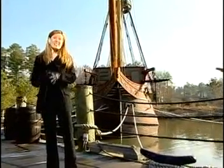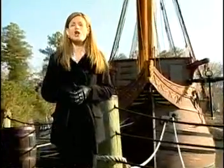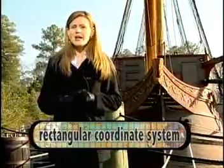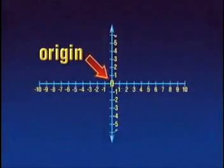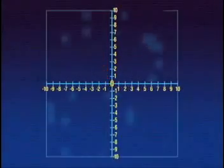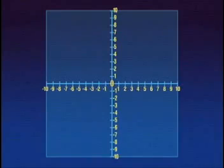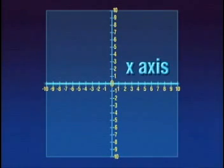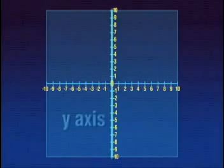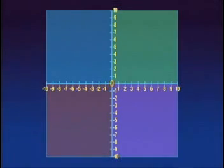Now that you understand number lines, let's continue. Depending on the data that scientists are analyzing, they may need to use what we call the rectangular coordinate system. This system consists of two number lines that cross at their origins and are perpendicular to each other. The area they create is called a plane — a two-dimensional object. The central point where the two lines cross is called the origin. The horizontal number line is called the x-axis, and the vertical number line is called the y-axis. The x and y axes divide the plane into four sections called quadrants.